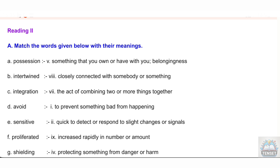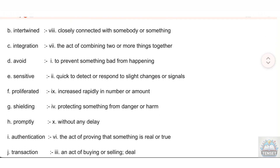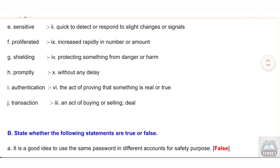D: avoid — to prevent something bad from happening. E: sensitive — quick to detect or respond to slight changes or signals. F: proliferated — increased rapidly in number or amount. G: shielding — protecting something from danger or harm. H: promptly — without any delay. I: authentication — the act of proving that something is real or true.